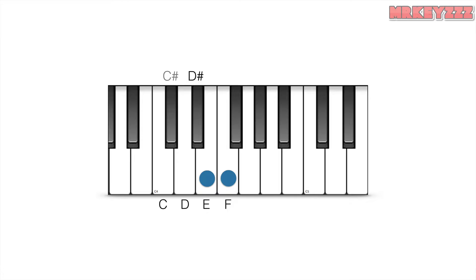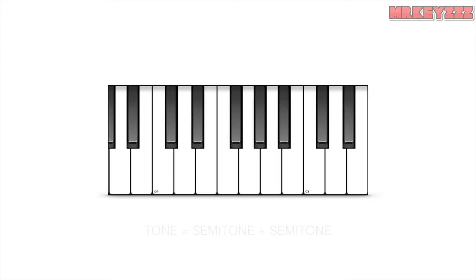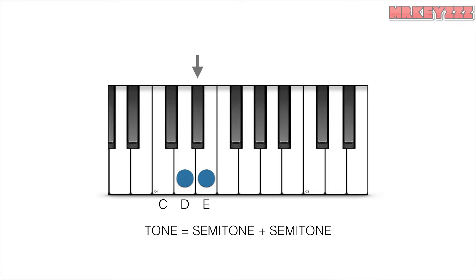Let's take a look at another type of interval called a tone. A tone is double the size of a semitone, so C to D is a tone. Notice how there's one key in between. D to E is a tone and we can see that there's one key between them as well. E to F sharp is a tone because there's a note in between here as well.